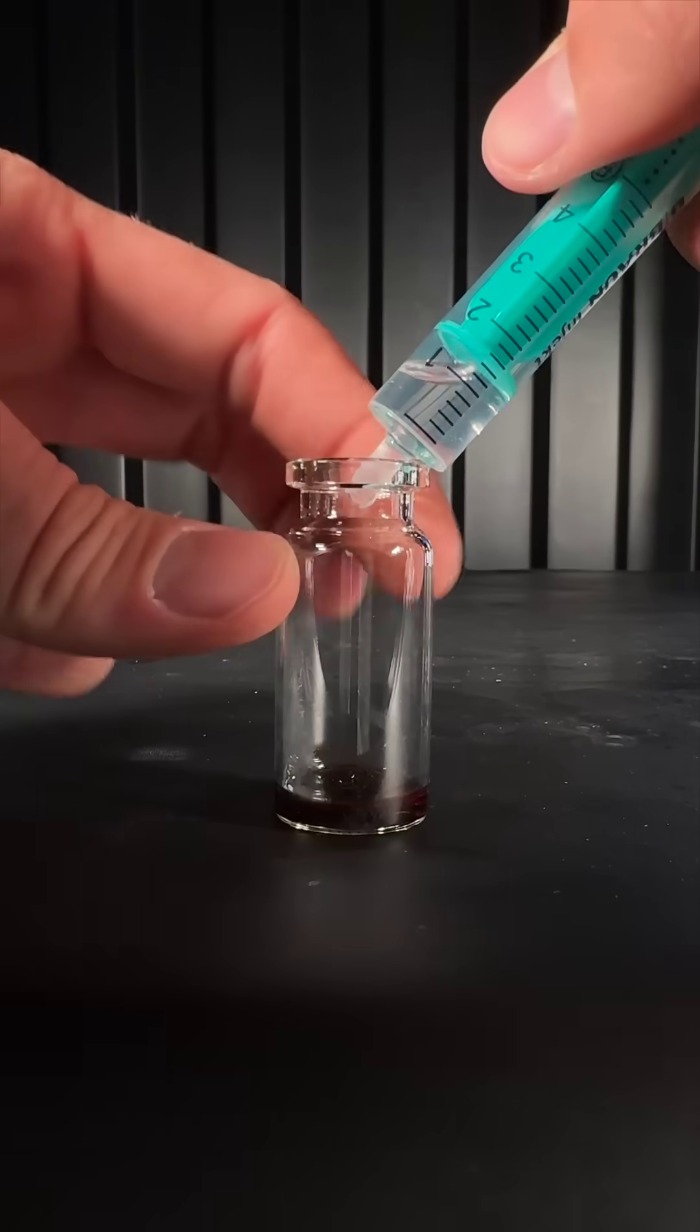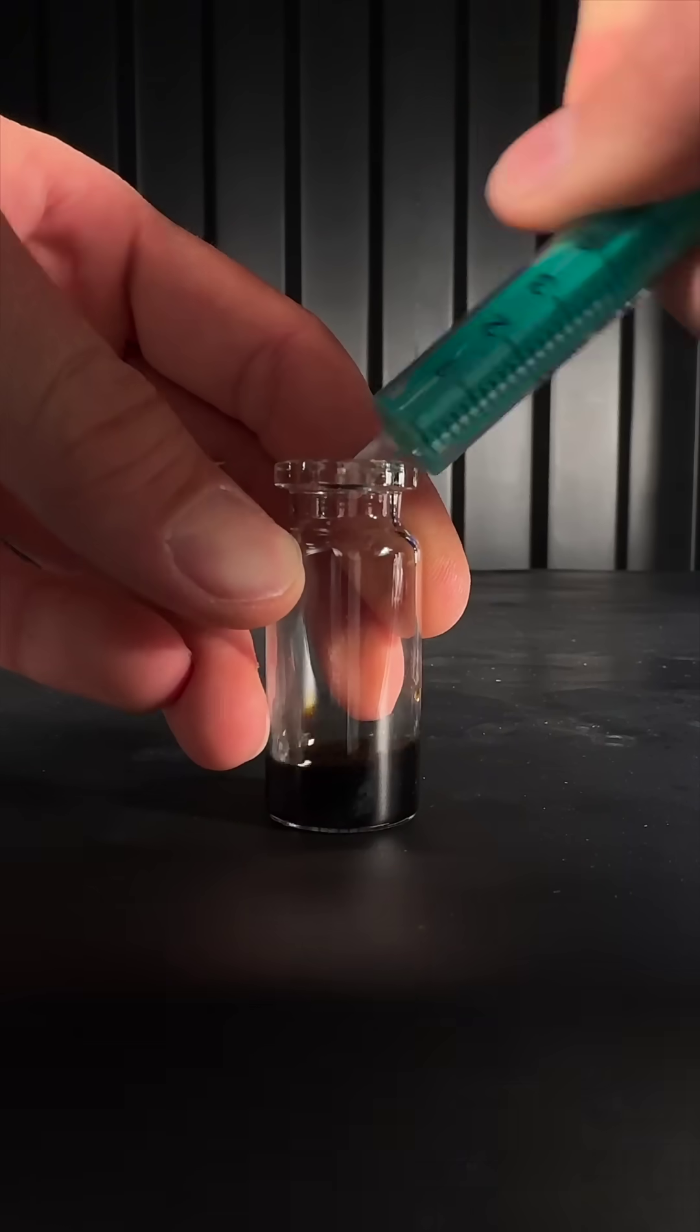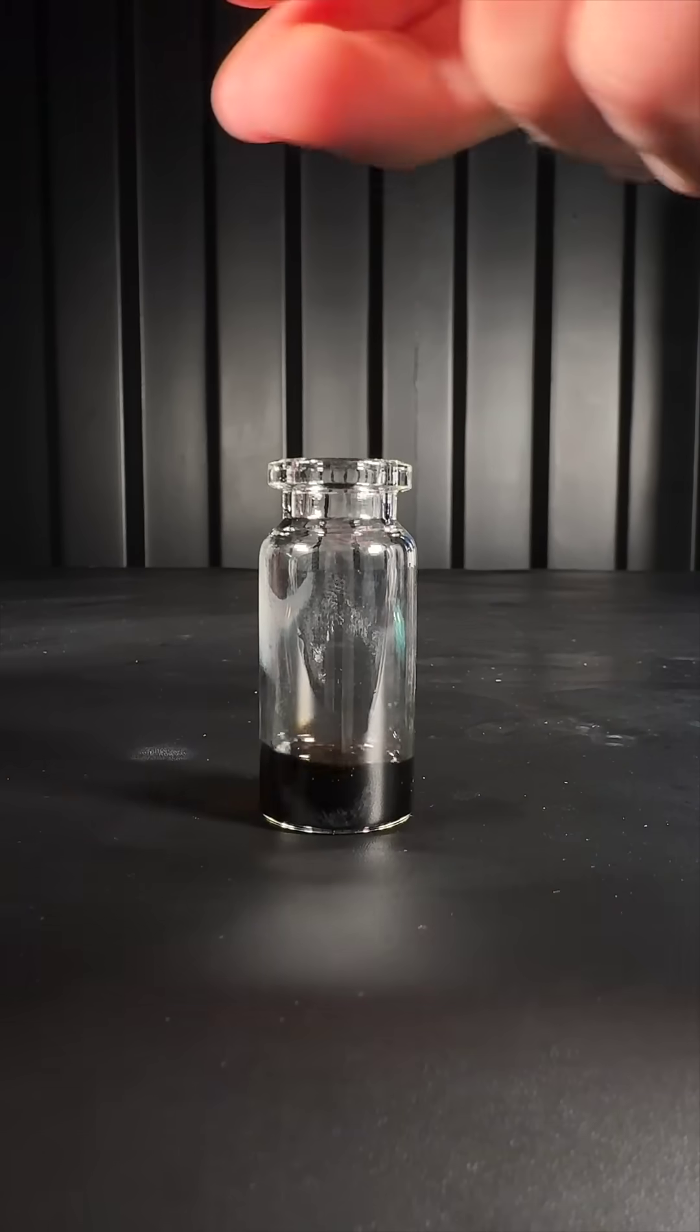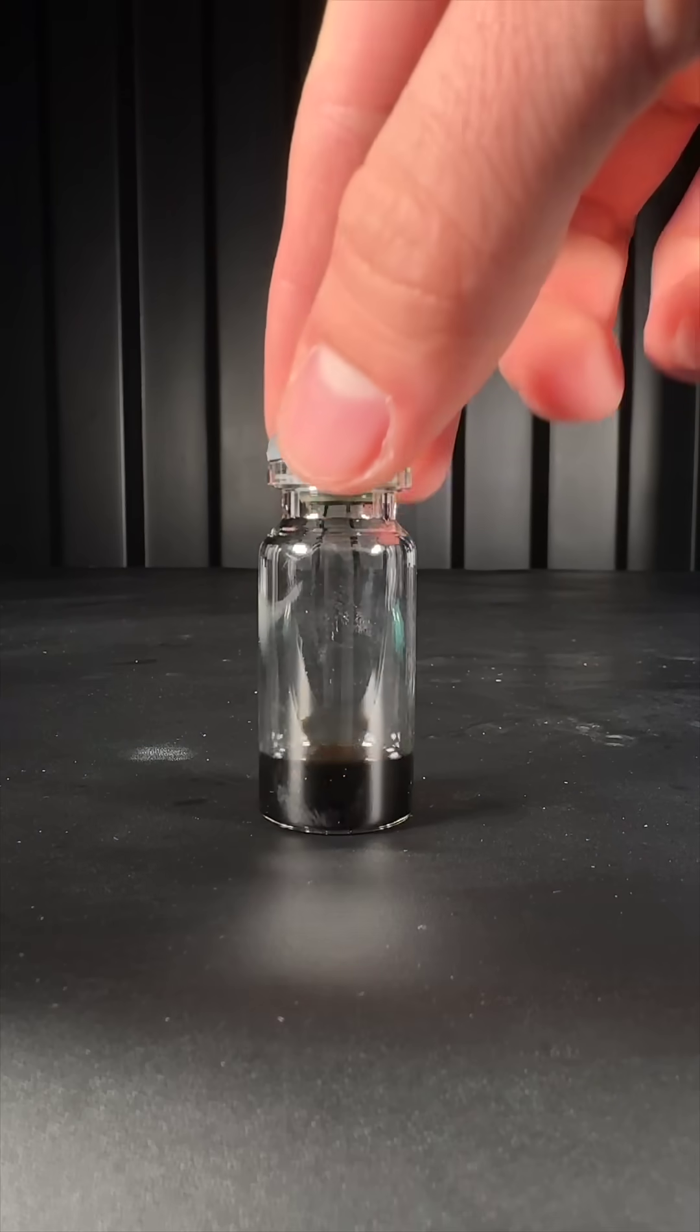The Grignard reagent I am dealing with is supposedly 3 molar methyl magnesium chloride. I dissolved the iodine in a small amount of THF and closed the cap.